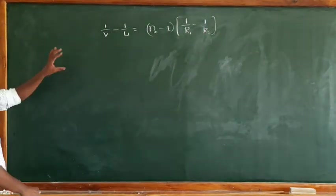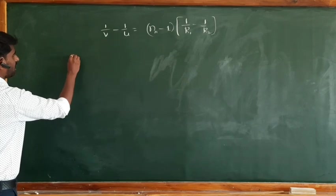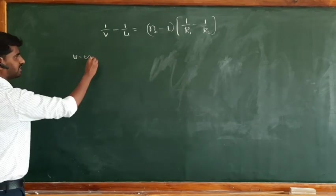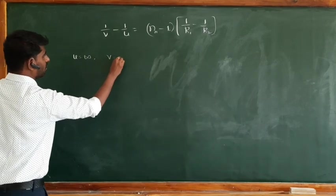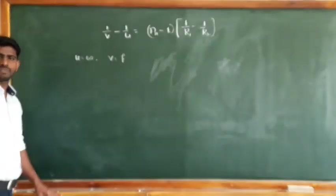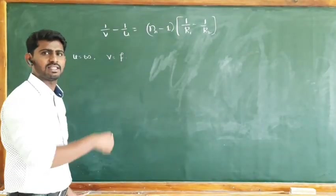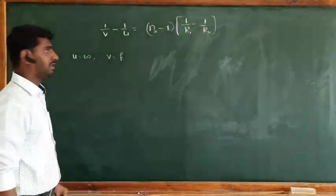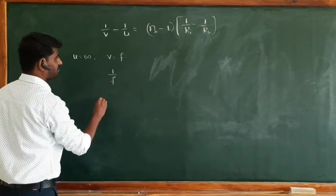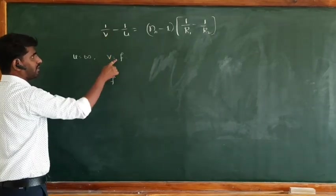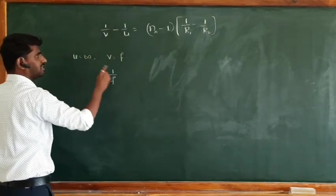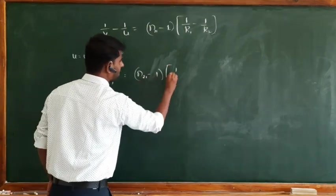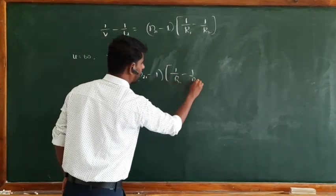We assumed if the object is at infinity, then the image distance will be the focal length — the image forms at F. That is why the image distance is F. We simplified it: 1/F, with V equal to F and 1/infinity equal to 0, giving us 0 equals (N21 minus 1) into (1/R1 minus 1/R2).